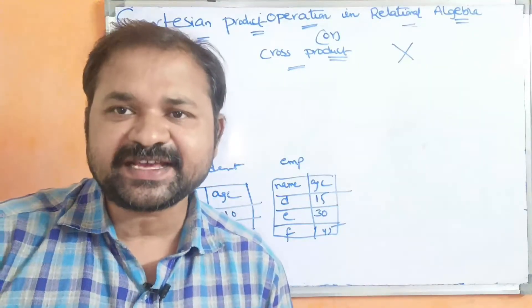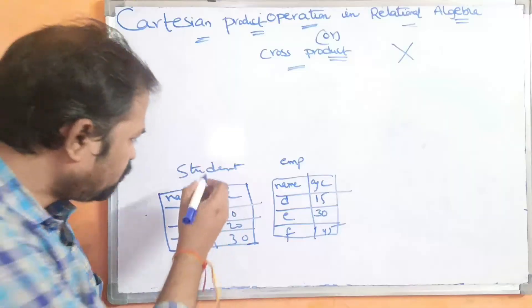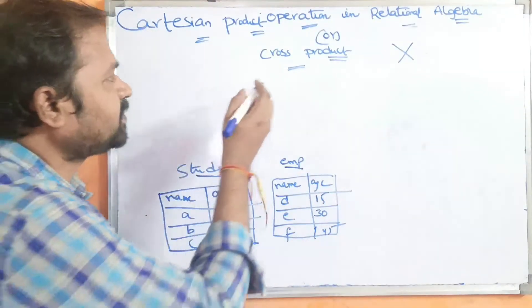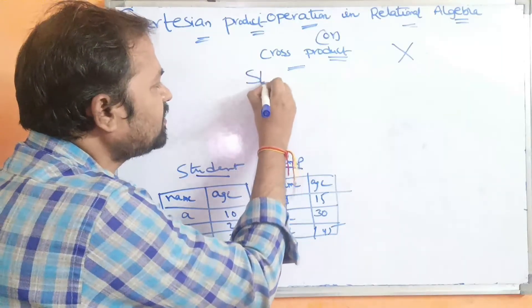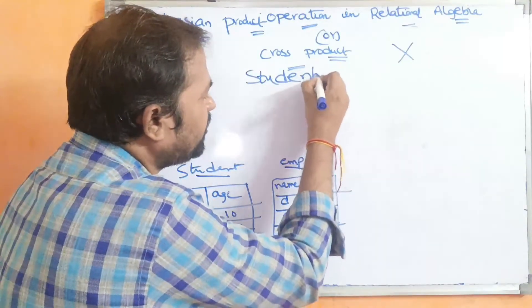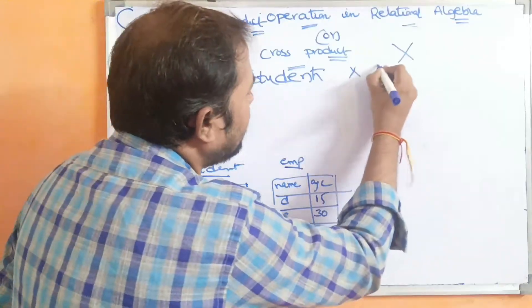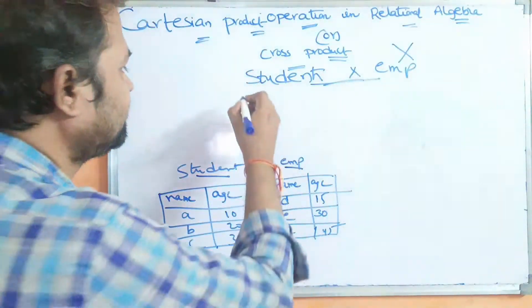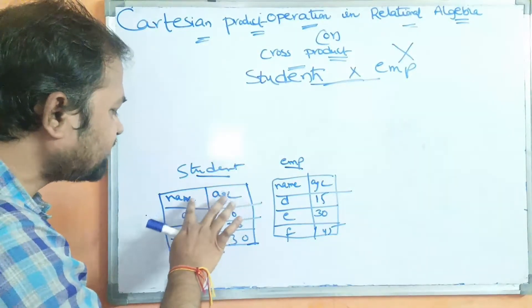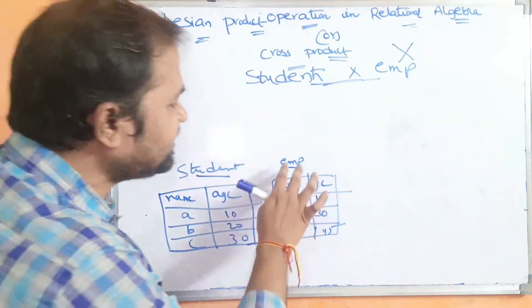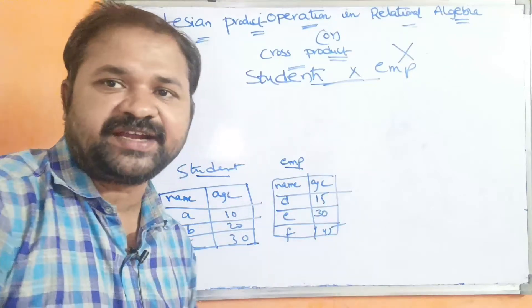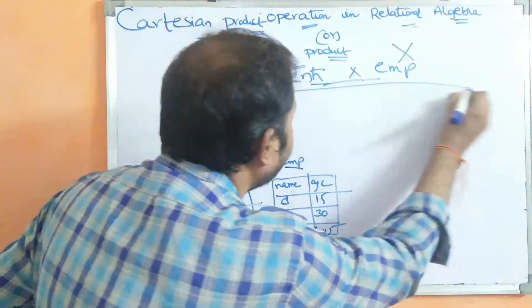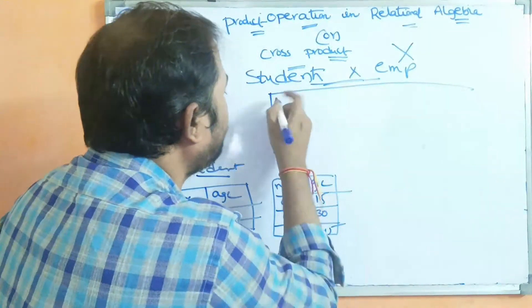Let us see an example. We have two relations: student and employee. Here we are performing Cartesian product on the student and employee relations. The student relation contains two attributes — name and ID — and the employee relation also contains two attributes — name and ID. So student cross employee contains four attributes.